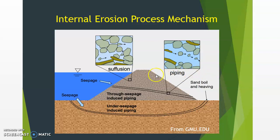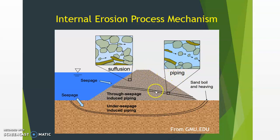First of all, I'm going to explain the difference between suffusion and piping. Most people may not be familiar with the suffusion terminology. The fine particles pass through that larger constriction area, and those types of micro-scale fine particle processes are what we call suffusion. Piping is a kind of macro-scale process — once the open space created by suffusion is sustained and progresses towards the upstream direction, we call it piping.